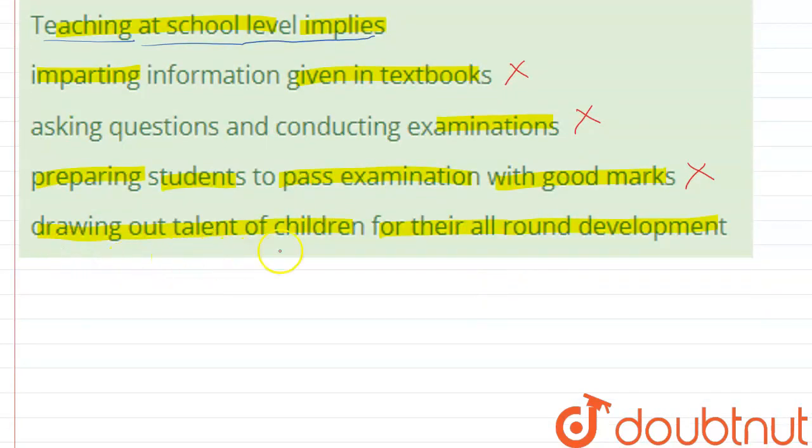Option 4: Drawing out talent of children for their all-around development. So this option is correct.